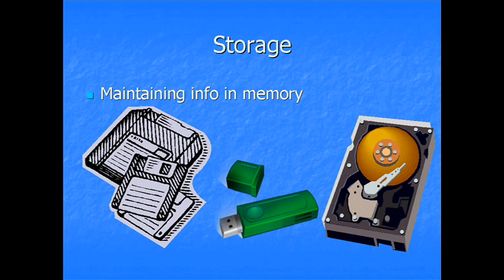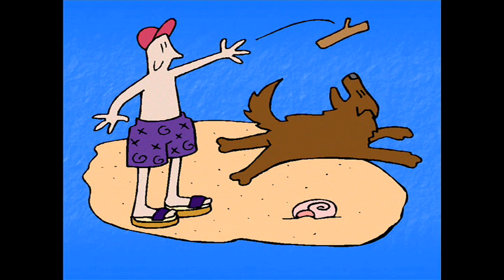The third process of memory is retrieval. This is the process of bringing back what you've encoded and stored to your mind. If you can't do retrieval, the information might as well not even be up there in the first place. You may have talked with grandparents or great-grandparents who say they have pictures but they can't find them — they know it's around the house somewhere. They have it encoded and stored, but they cannot retrieve it.